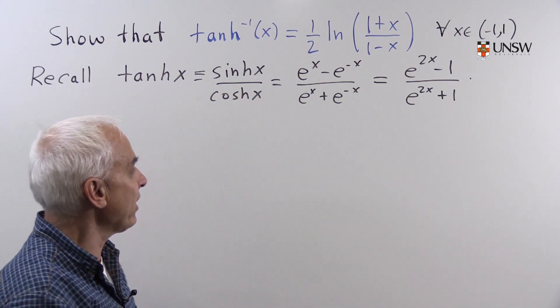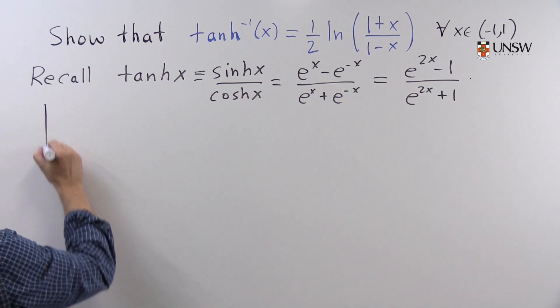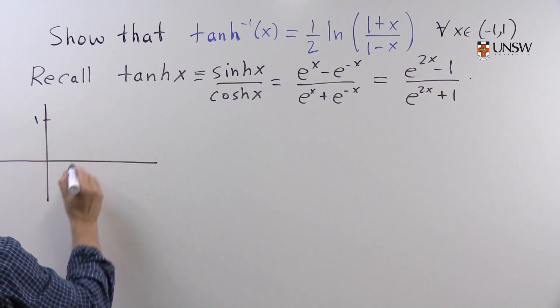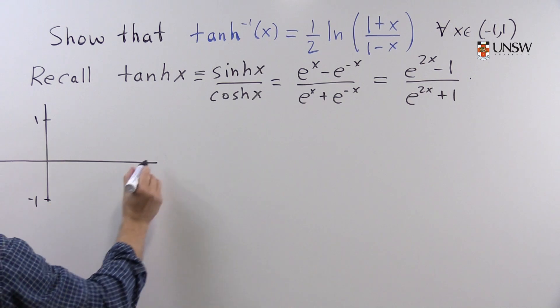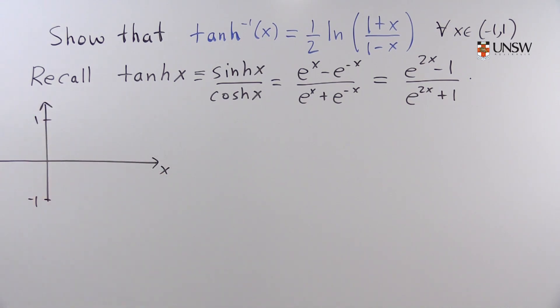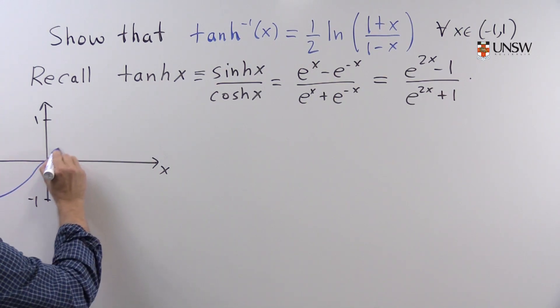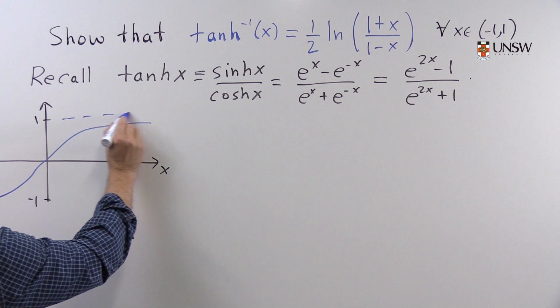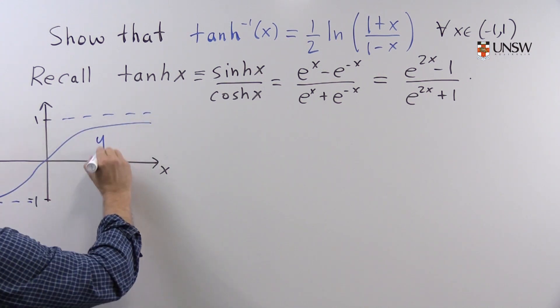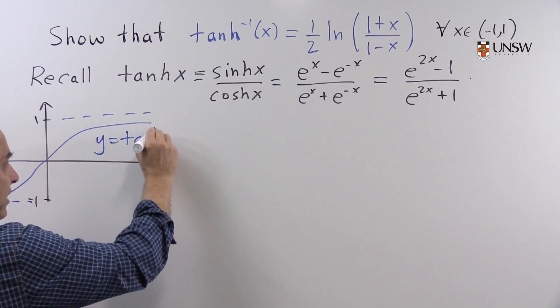So that's tanh of x. And let's draw a little graph. There's 1, there's minus 1, there's x and y. So the function looks like this. It has an asymptote at 1 and minus 1. That's y equals tanh x.